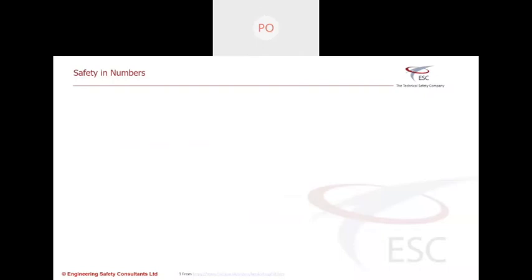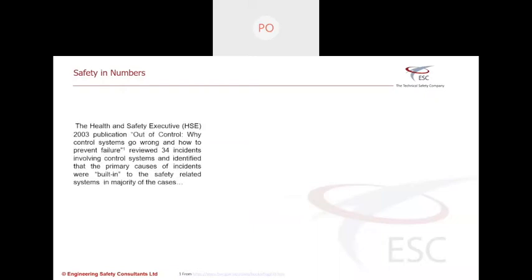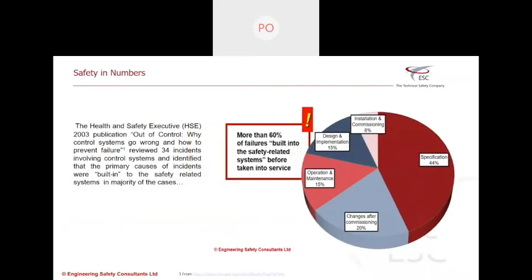Some of you are going to be familiar with what this slide is going to show. Some of you won't. In both cases, I think it's valuable that we have a bit of time to discuss this. In 2003, the health and safety executive conducted a research on incidents associated with control systems. And they identified that the primary causes of incidents were built into the safety systems in the majority of the cases. If you have a bit of pen and paper, just note down the number of causes that were in built, a percentage, and what you thought was the major cause. You might be surprised, you might not. What was found in that research was that more than 60% of the failures were there before you use them.